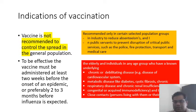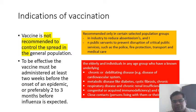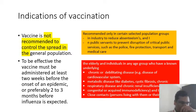Priority groups for vaccination also include persons with chronic debilitating disease, metabolic disease, diabetes, respiratory disorders, congenital heart disease, and close contacts of high-risk individuals. The vaccine must be administered at least two weeks before the onset of the epidemic — ideally two to three months before the expected epidemic.